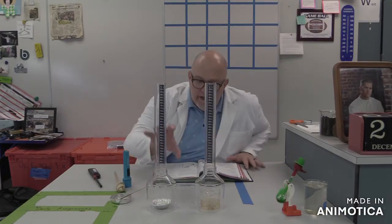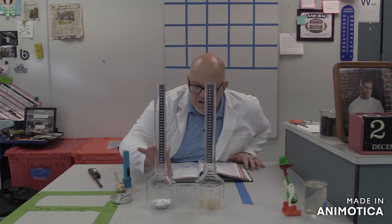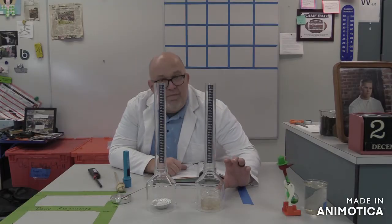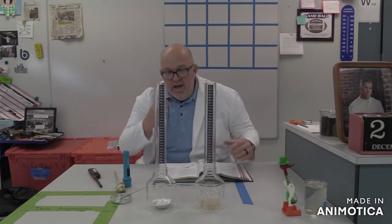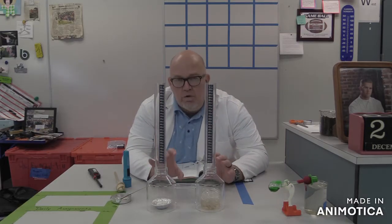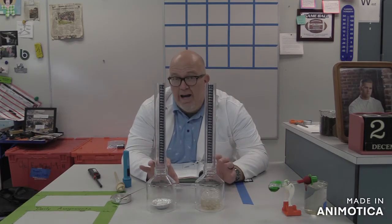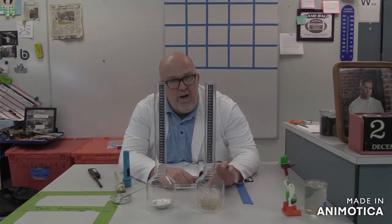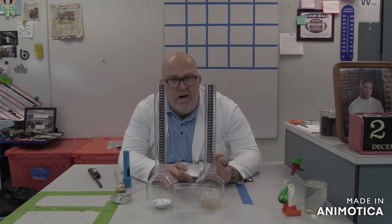So over here we have in this convection tube a candle, and in this one we have some dirty ice water, but ice water nonetheless. And what these two different sides are going to represent: the candle will represent hot dry air, and you guessed it, this ice water over here will represent cold moist air.